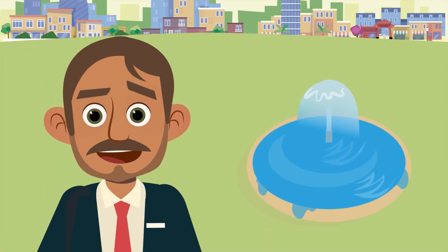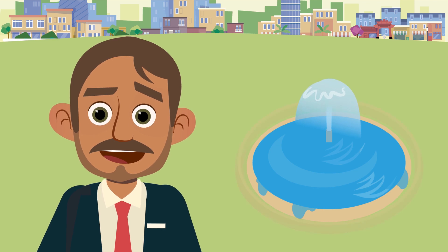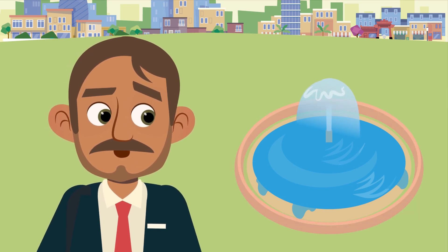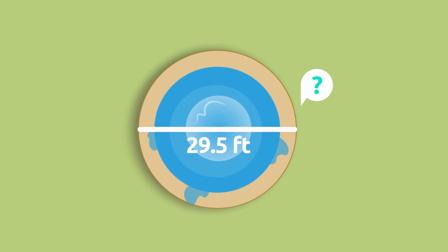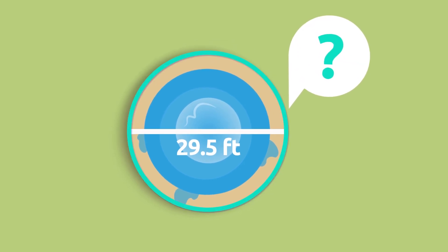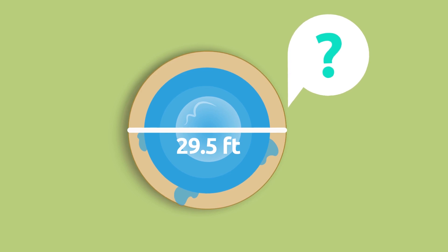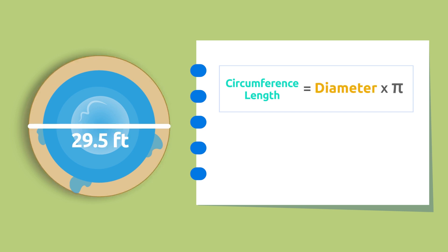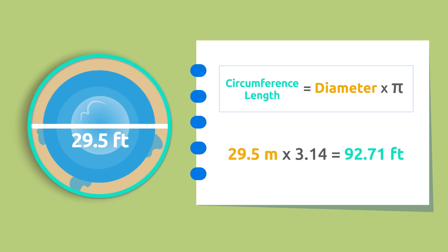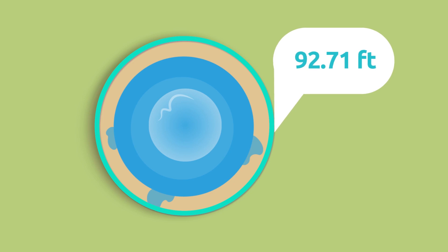Let's look at another example. The mayor wants to put a fence around the fountain of the village. The fountain has a circular shape and its diameter is 29.5 feet — how many feet of fencing material does he need to buy? To figure it out, we calculate the length of this circumference: we multiply the diameter by pi. The mayor needs to buy 92.71 feet of fencing material to surround the fountain.